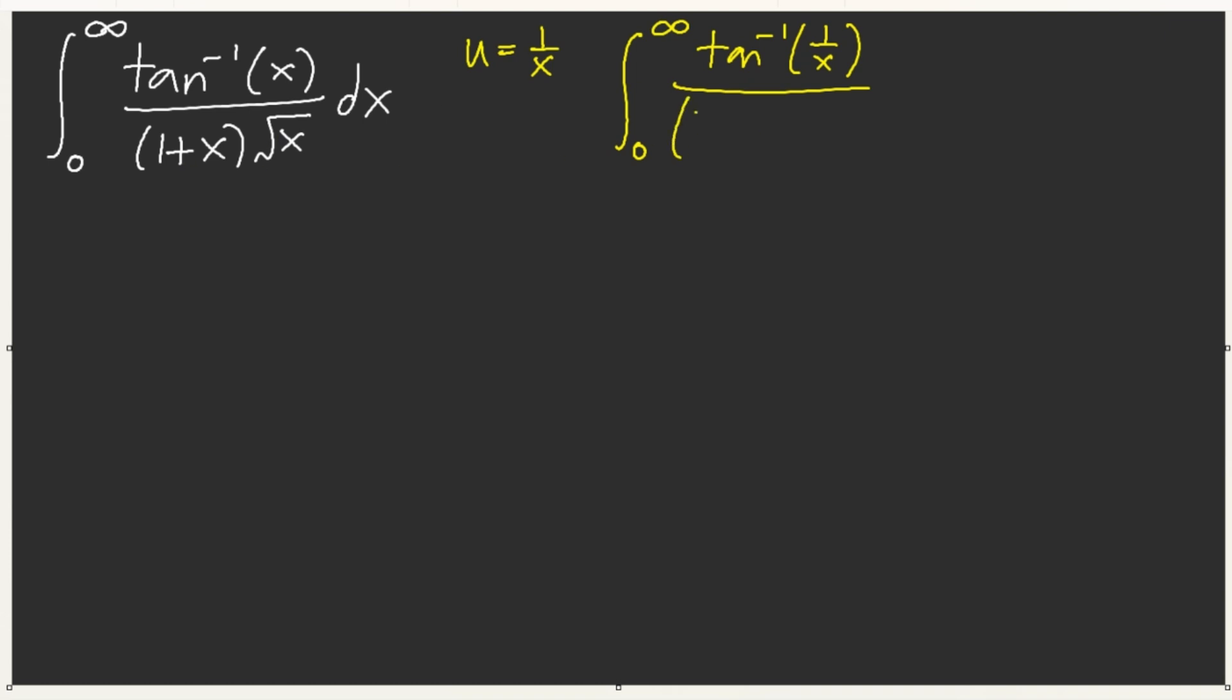But then, we have 1 over x here, square root of 1 over x. And here, dx, we get x squared. But how do we handle this denominator here?